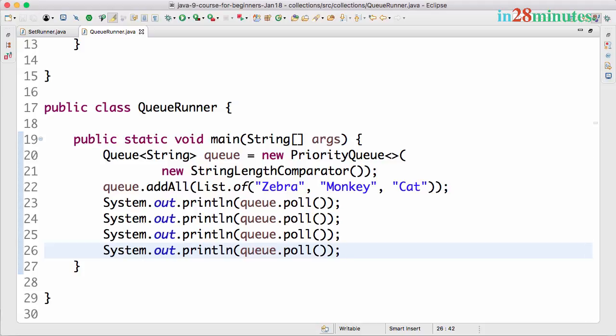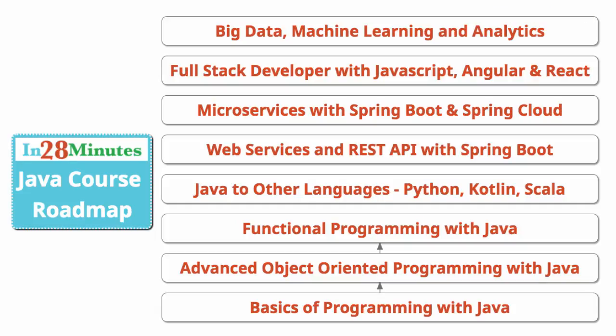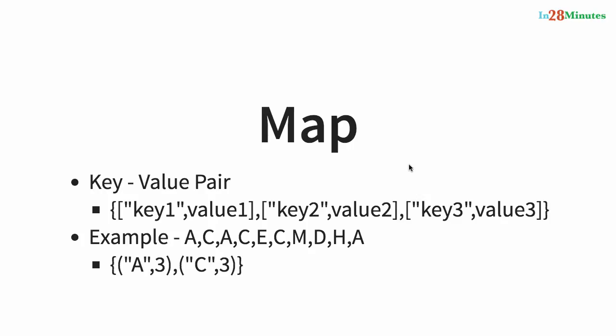Welcome back. In this step let's start with the last collection — the map interface. The most important thing about the map interface is that it does not extend the collection interface, so all operations related to collection do not apply to map. Map is part of the collections framework, but it does not implement the collection interface. Map is used to store key-value pairs.